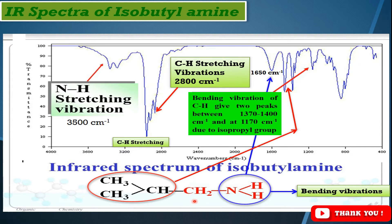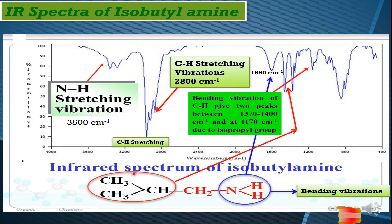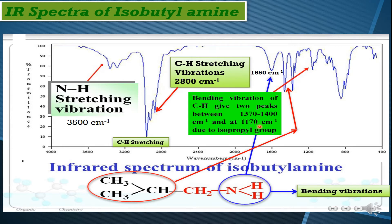The carbon-hydrogen bending vibration gives two peaks between 1370 and 1400 cm⁻¹. These two peaks are characteristic of the isopropyl group's C-H bending vibration. Above that, around 1170 cm⁻¹, we have another peak — the isopropyl group C-H bending vibration appears again in this region. Beyond this, the spectrum becomes quite complicated as we enter the fingerprinting region.